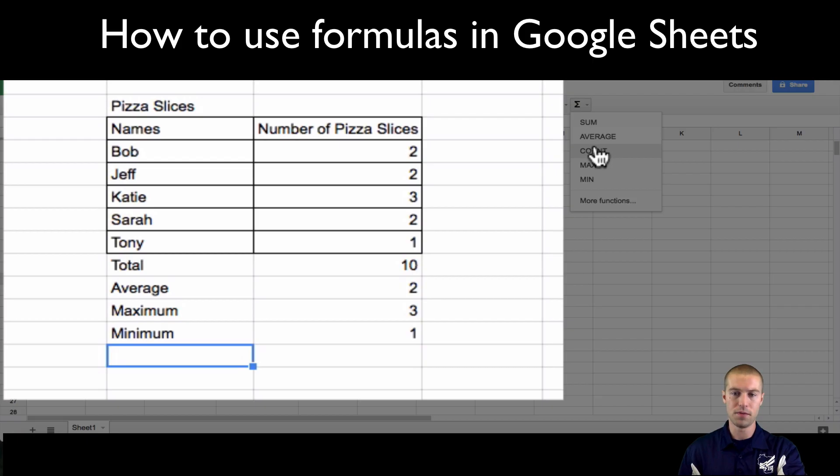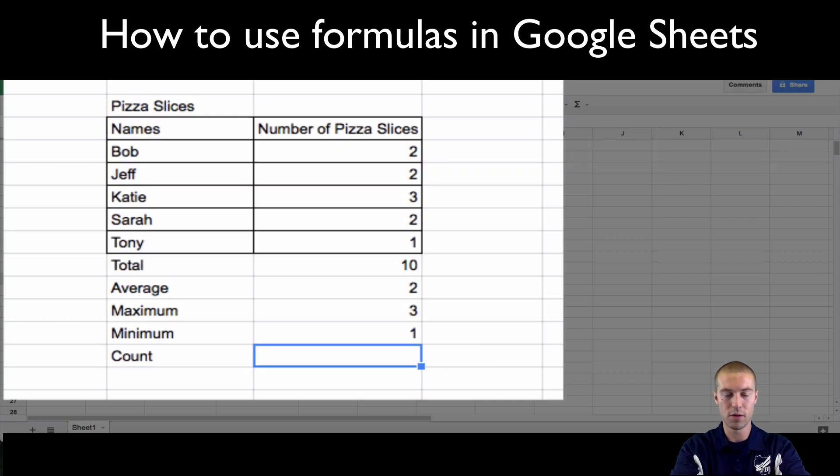There's also the count one. Count in this case is going to work differently than sum. So let's say we want to count everything, just so you can have an idea of what count does. So we can click count.